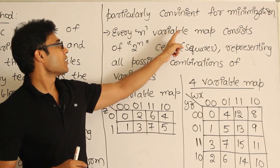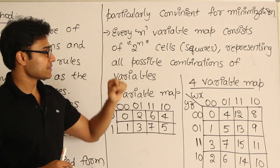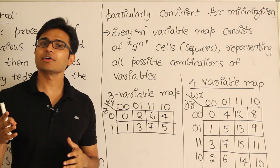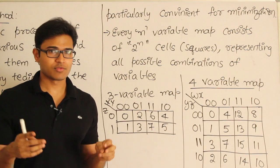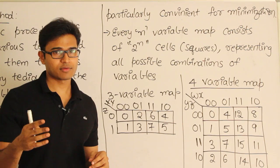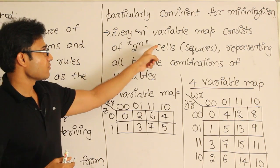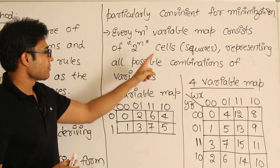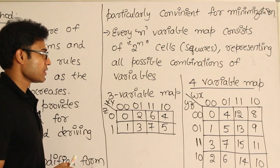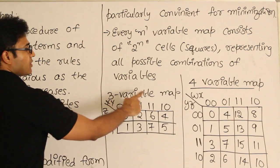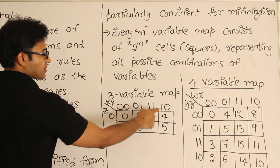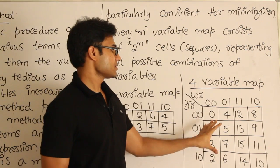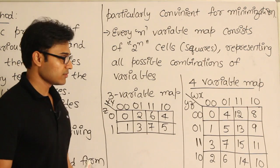Every n-variable map consists of 2 to the power n cells. Which means if we have n variables, there are 2^n min terms. If you have 3 variables, there are 8 terms; if you have 4 variables, there are 16 terms. Every n-variable map contains 2^n cells representing all possible combinations of variables. For example, a 3-variable map has 8 cells, and a 4-variable map has 16 cells.